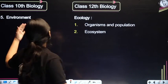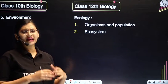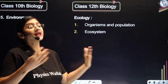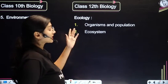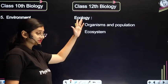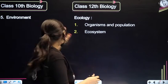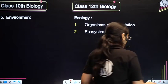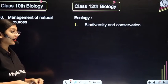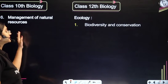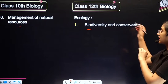Coming to the Environment chapter — many students think it is easy and ignore it. But the unit Ecology in class 12 has two chapters: Organisms and Population, and Ecosystem, which have a lot to do with the Environment chapter. The last underrated chapter has connections with Biodiversity and Conservation in class 12 ecology.